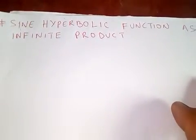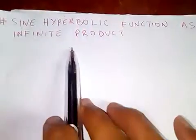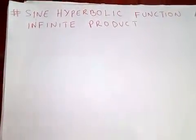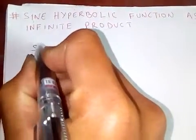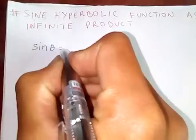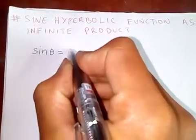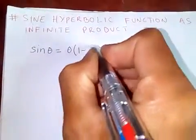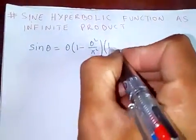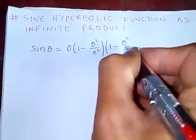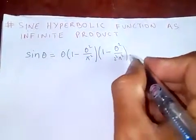Today I'm going to discuss the sine hyperbolic function as an infinite product. Firstly, we know that sine theta in terms of an infinite product is: theta times (1 minus theta squared over pi squared) times (1 minus theta squared over 2 squared pi squared) and so on.